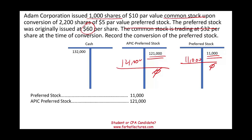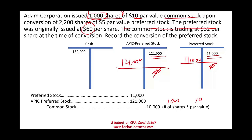Now we need to issue the common stock. When you credit common stock, it is the number of shares times the par value. In this example, 1,000 shares times the par value of $10 gives us $10,000 for common stock. The last entry is additional paid-in capital common stock, which is a plug figure to make sure the journal entry balances.